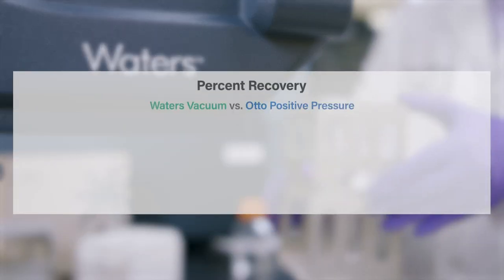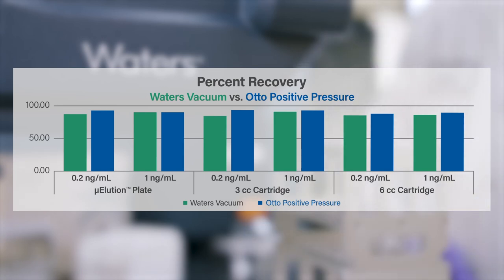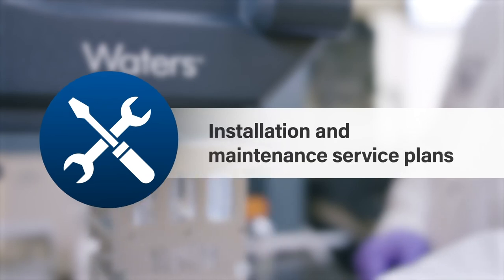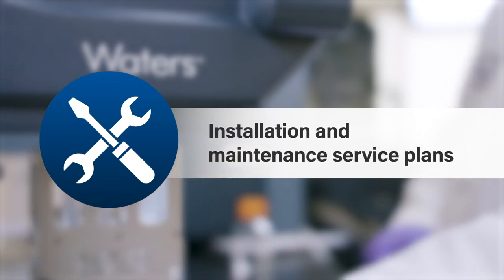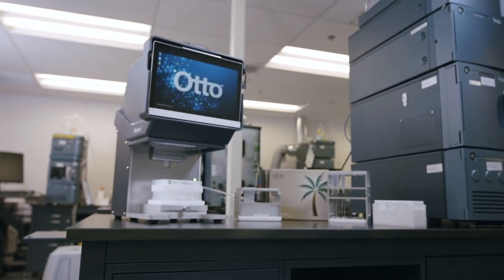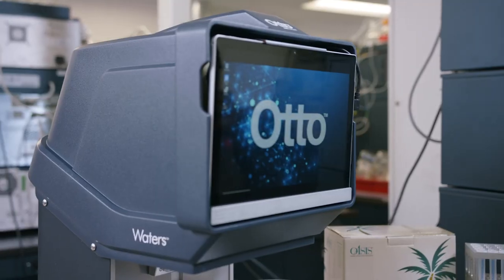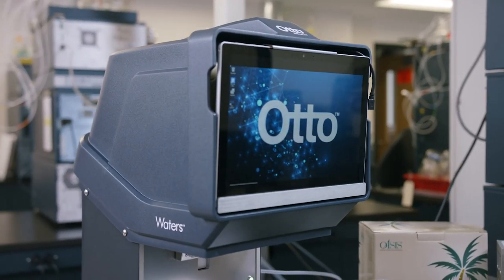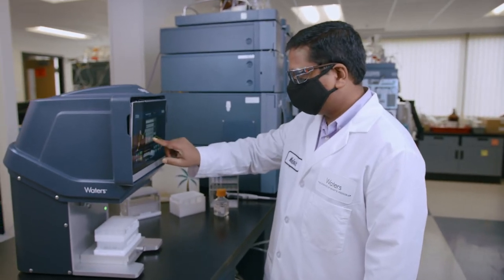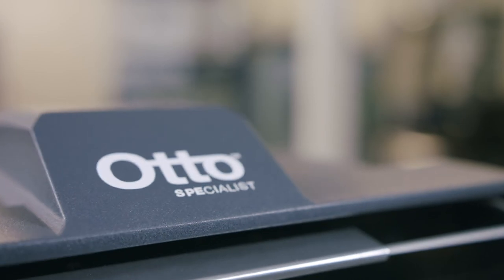Safely transfer vacuum methods to positive pressure for plates and cartridges without fear of performance loss. Have confidence in continued system performance with installation and maintenance service plans available. The new Otto Specialist Positive Pressure Manifold will change the way you view SPE — ensuring reproducibility, limiting user variability, enabling method transfer, and increasing your documented process history. It's the smart and controlled way to process SPE.